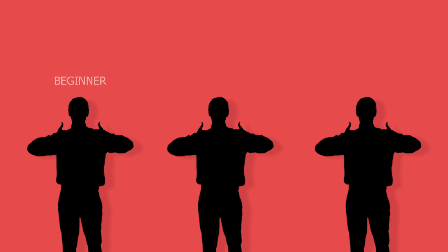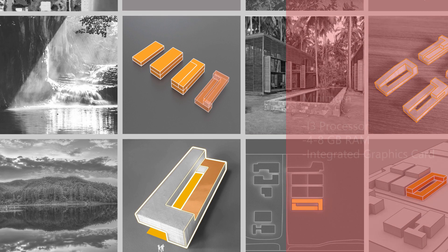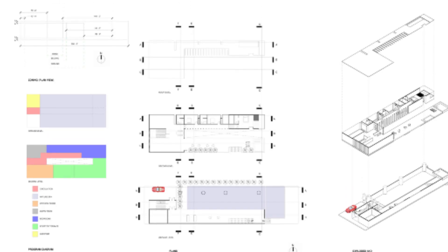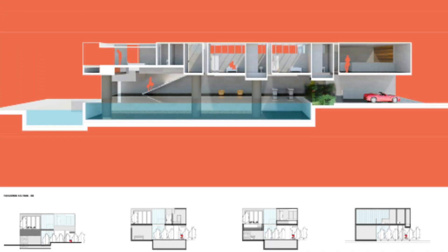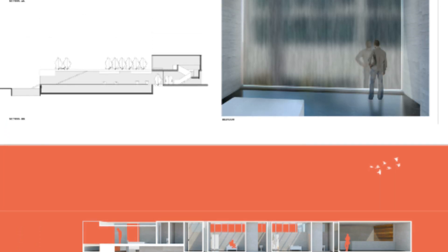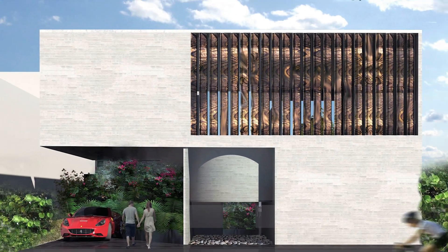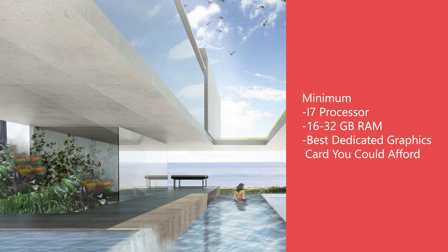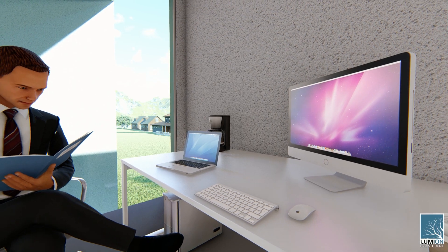Which laptop you decide to buy will depend on what level you are and how much money you have to spend. When you start studying architecture, you're going to be using your laptop for basic plans, massing, and diagrammatic presentations. In this case, an i3 with 4 to 8 gigabytes of RAM and an integrated graphics card should be a fine starting point. As you get deeper into your second and third year, you will be creating more complex designs with more materials and details, and most likely animations and more detailed presentations, so minimally you will want an i5 with at least 8 gigabytes of RAM and a dedicated graphics card. Ultimately, for complex animations, renders, and masses, you will want at least an i7 with at least 16 gigs of RAM and the best graphics card you can afford. At that point, it may even be worth looking into a desktop at home only for rendering — you might even save some money that way.